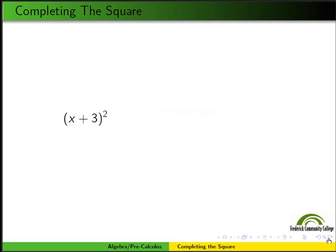Let's start with observing this perfect square here, (x + 3)². Let's expand and get x² + 6x + 9.